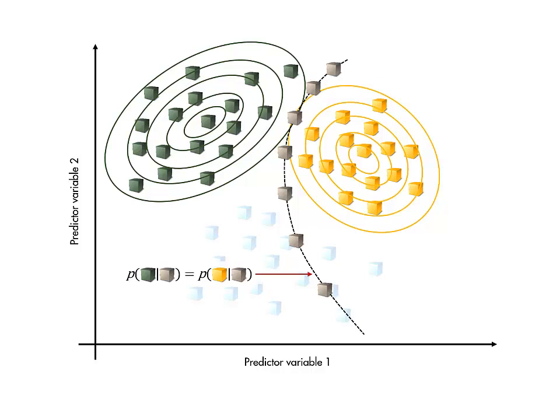We can do all this theoretically, resulting in an equation for the boundary that depends on the parameters of the fitted distributions. This means that we don't actually need to go through the whole process to perform discriminant analysis. We just need to calculate the means and covariances and apply the formula for the boundary.